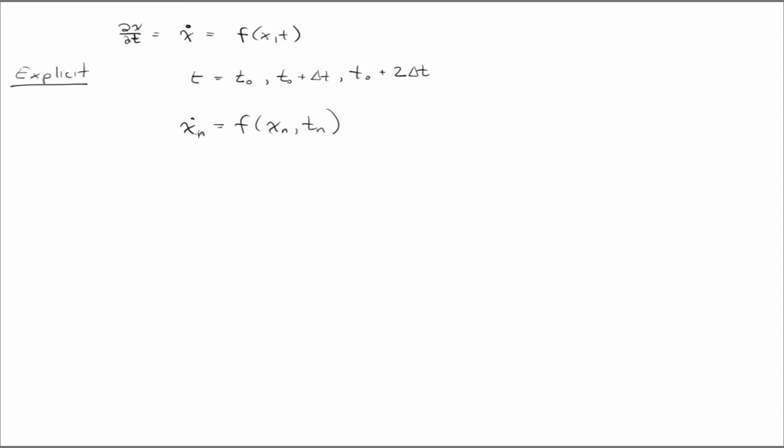So, now we have a choice in how we approximate this time derivative, right? One choice would be to say that x dot at n is equal to x n plus 1 minus x n over delta t,